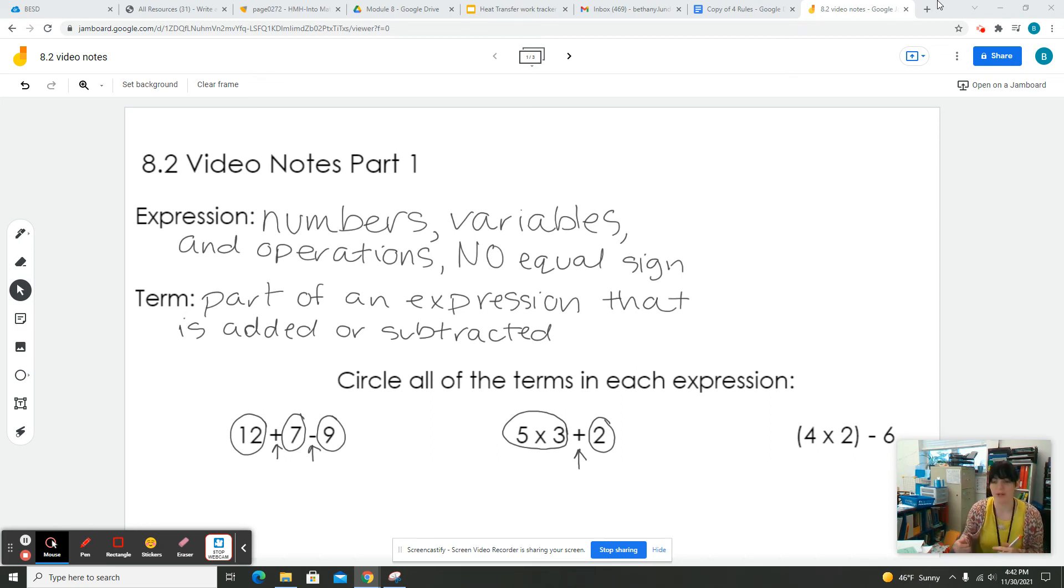Now for the third one, we have a subtraction sign right there. And our subtraction sign separates the terms. And so our subtraction sign separates the 6 from the rest. And we also have this area right here, which just like the one before, has a multiplication sign in between the 4 and the 2. And so that means that it is part of the same term because terms are only separated by a subtraction sign or an addition sign.